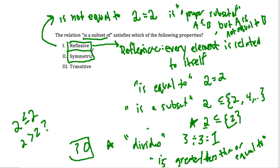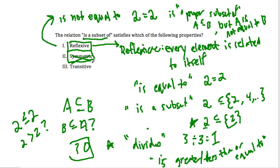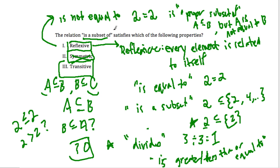Is 'subset of' symmetric? If A is a subset of B, is B necessarily a subset of A? No, not necessarily. For example, if A is a subset of the group of even numbers, are all the even numbers a subset of the group containing just 2? No. However, subsets are transitive. If A is a subset of B, and B is a subset of C, then A must also be a subset of C. You can think of C as a larger group than B, and A as the smallest group. So the relation 'is a subset of' satisfies the reflexive and transitive properties.